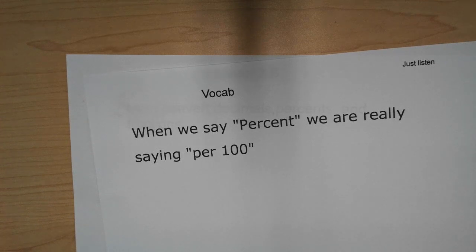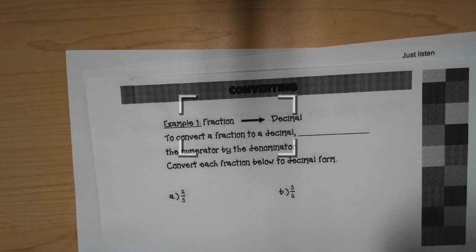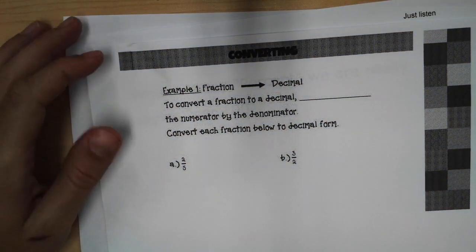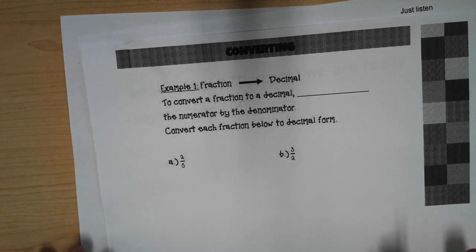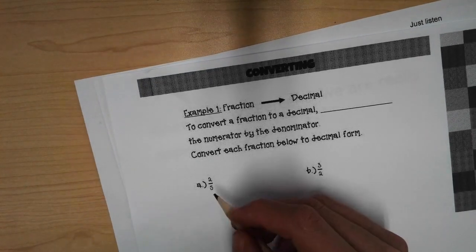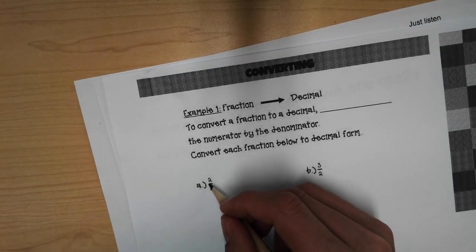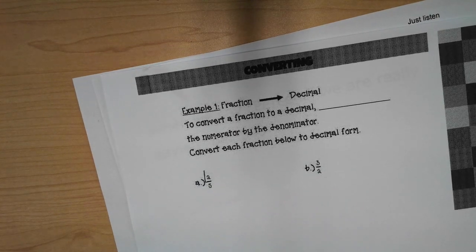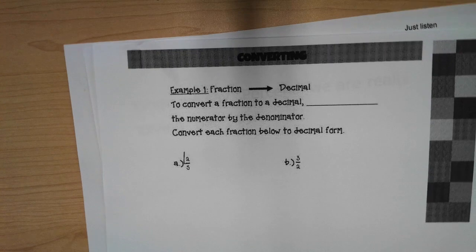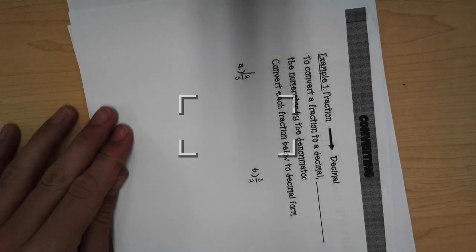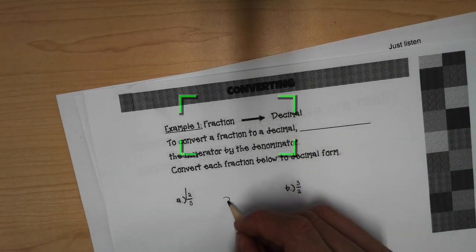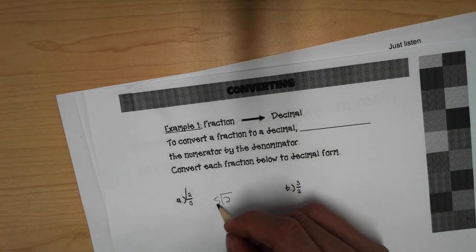Let's go ahead and convert two-fifths from a fraction to a decimal. There's a few different ways you can do this. One way is by dividing. I like to draw a line above the two. And that tells me that the two goes inside the house. So I have two with a five on the outside.